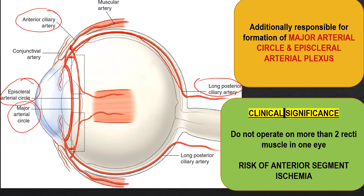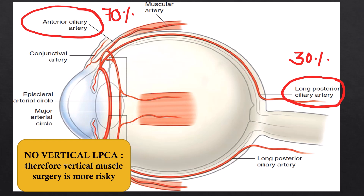Clinically, it is advised not to operate on more than two rectus muscles in one eye at a time, because damaging multiple anterior ciliary arteries compromises the episcleral and major arterial circles, leading to anterior segment ischemia. Approximately 70% of the blood supply to those arterial circles comes from the anterior ciliary arteries and only 30% from the long posterior ciliary arteries. Along the vertical recti — both superior and inferior — the long posterior ciliary arteries are absent, making surgeries on these muscles riskier for developing anterior segment ischemia. That concludes this first part; the next segment covers the oblique muscles of the eye.